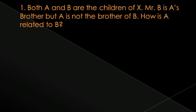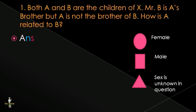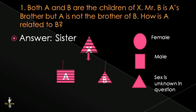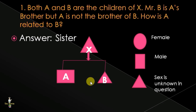First question: Both A and B are the children of X. B is A's brother, but A is not the brother of B. How is A related to B? This is a confusing question but easy to solve using a family tree. The answer is sister. Since B is not the brother of A and both are children of X, B will be the sister of A.